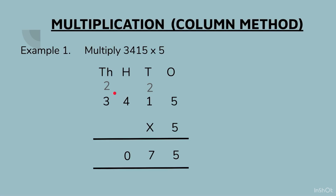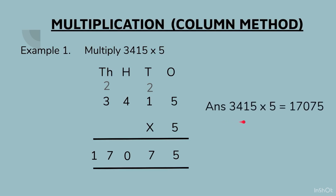That gives us 17. We will write the entire 17 here because there is no other number after this. The answer is: 3415 × 5 = 17,075.